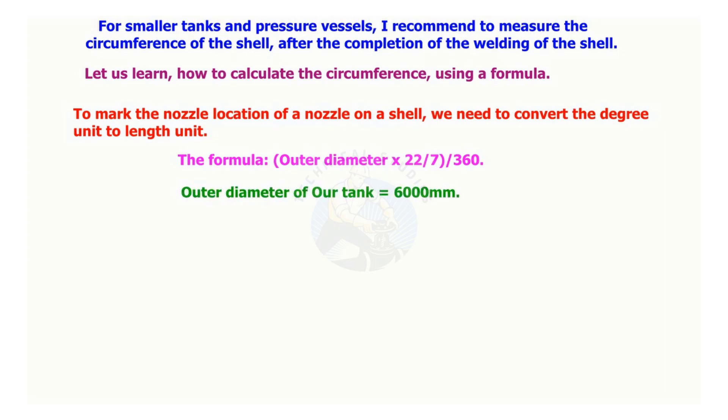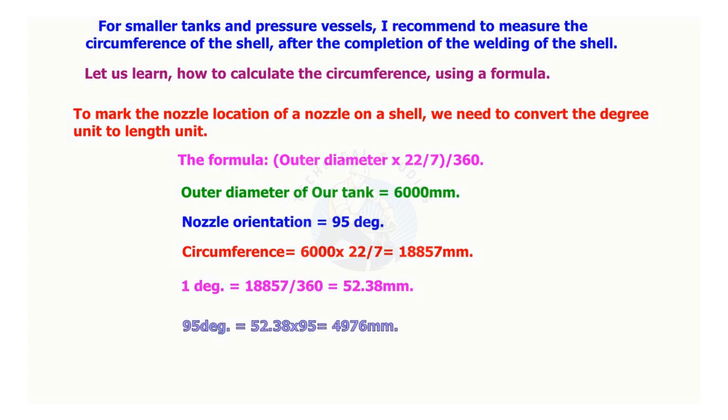Outer diameter of the tank is 6000 millimeters. Nozzle orientation is 95 degrees. Circumference is 6000 multiplied by 22/7 equals 18,857 millimeters. 1 degree equals 18,857/360 equals 52.38 millimeters. 95 degrees equals 52.38 multiplied by 95 equals 4,976 millimeters.